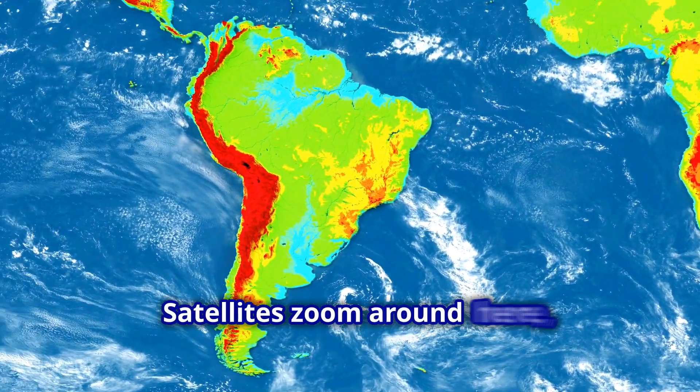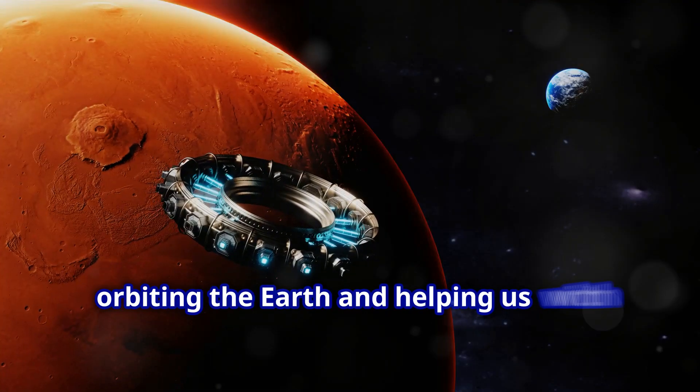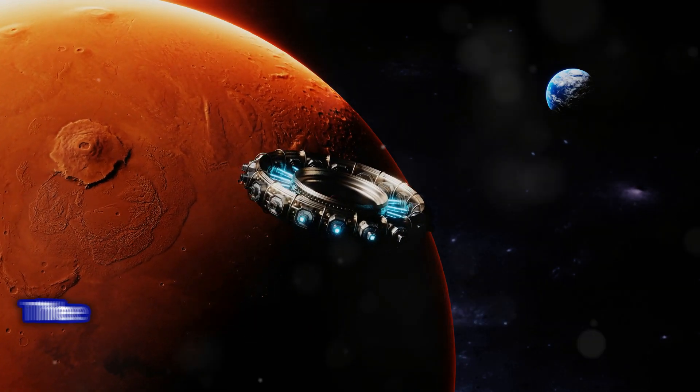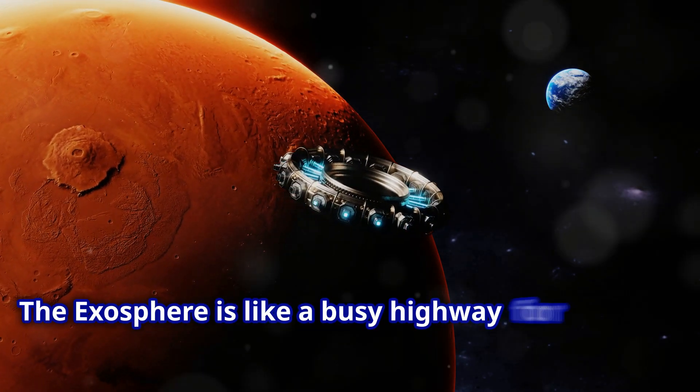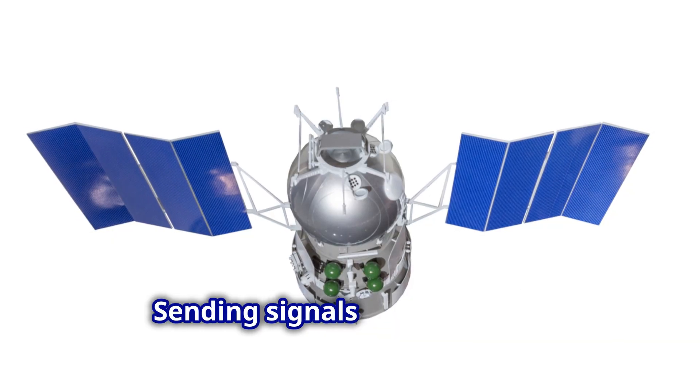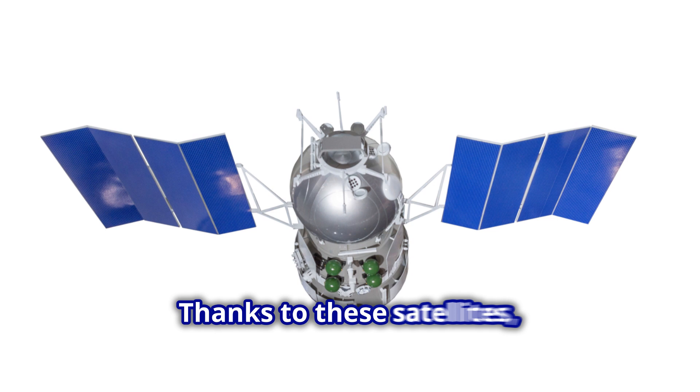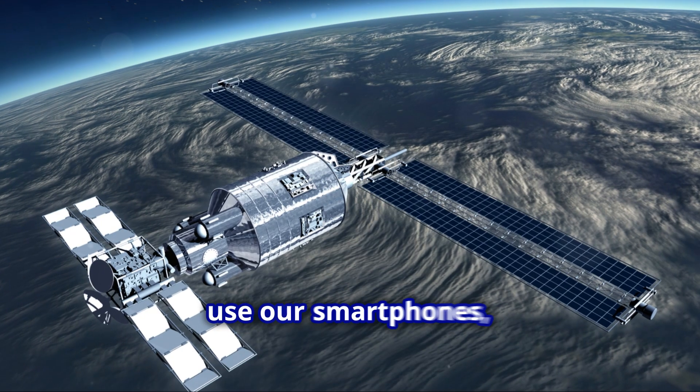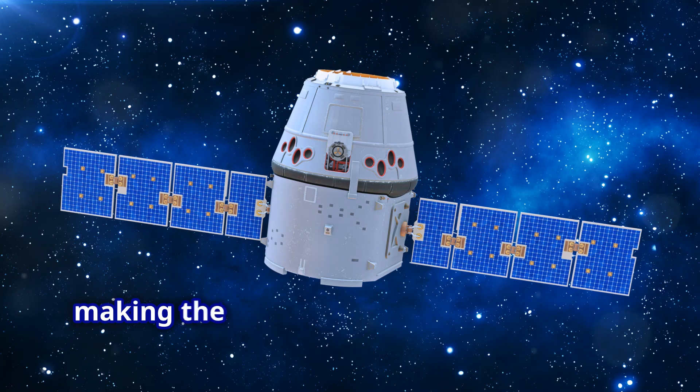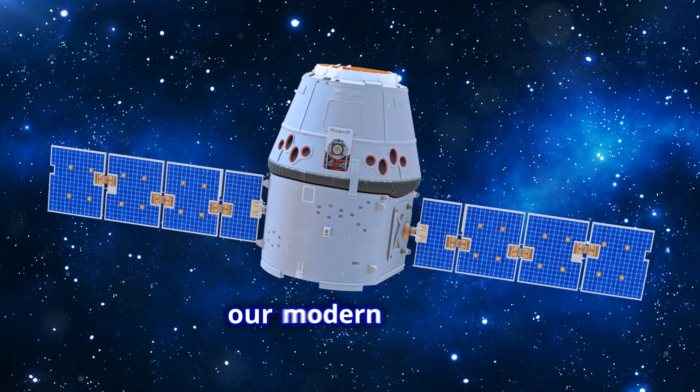Satellites zoom around here, orbiting the Earth and helping us with communication, weather forecasting, and even GPS navigation. The exosphere is like a busy highway for satellites, constantly buzzing with activity, sending signals back to Earth. And thanks to these satellites, we can watch TV, use our smartphones, and even predict the weather. They play a crucial role in our daily lives, making the exosphere an essential part of our modern world.